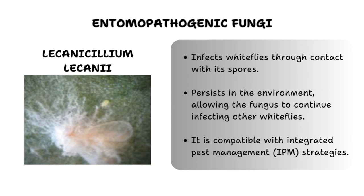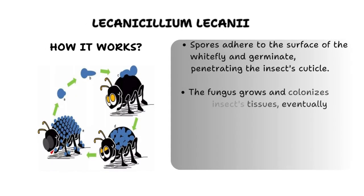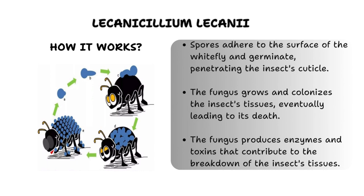Commercial formulations of Lecanicillium lecanii are available for agricultural and horticultural settings. Upon application, the fungus adheres to the cuticles of whiteflies and penetrates their bodies. Inside the whiteflies, Lecanicillium lecanii releases enzymes that degrade the insect's tissues, leading to its eventual death. As infected whiteflies come into contact with healthy individuals, the fungus can spread within the population through direct contact or by releasing spores. This secondary infection mechanism contributes to efficient control, and this biocontrol agent is particularly effective against various life stages including eggs, nymphs and adults.